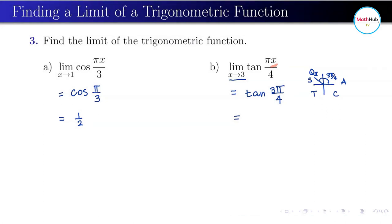So since 3π over 4 is on the second quadrant, therefore tangent there is negative. So we have negative and then we know that the reference angle will be π over 4. So tangent of π over 4 is equal to square root of 2 over 2. So the answer is negative square root of 2 over 2.